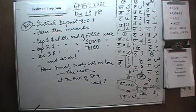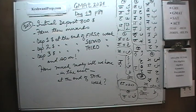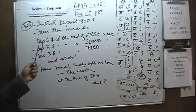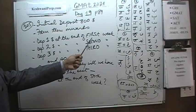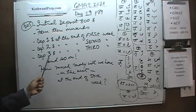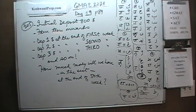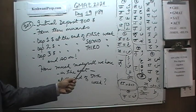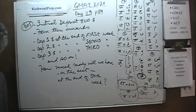We are going to open an account in a bank with an initial deposit of $800. After that, we are going to deposit $1 at the end of the first week, $2 at the end of the second week, $3 at the end of the third week, and so on. The question is: if we continue this pattern for 50 weeks, how much money will we have in the account at the end of the 50th week? Go ahead and do it yourself.